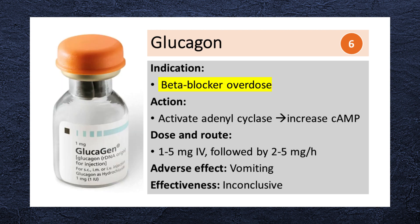Glucagon is indicated for beta-blocker overdose. It activates adenylate cyclase, causing an increase in cyclic AMP. The initial dose is 1-5 mg IV followed by 2-5 mg per hour infusion as needed. It should be noted that glucagon commonly induces vomiting, and there is a lack of conclusive evidence regarding its effectiveness in beta-blocker overdose.